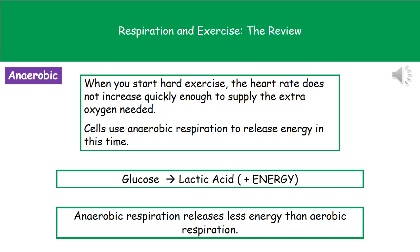If we now think about anaerobic respiration, this is the type that doesn't actually need oxygen. What happens in your body is that when you start hard exercise, your heart rate doesn't increase quickly enough to supply the extra oxygen needed for aerobic respiration. As a result, our cells have to use anaerobic respiration to release energy until our heart rate does increase enough. The word equation is quite simple: glucose makes lactic acid. Energy is also made, but because energy isn't a chemical substance, we don't include it in the word equation. Anaerobic respiration releases far less energy than aerobic respiration — it's kind of a stopgap until our heart catches up.